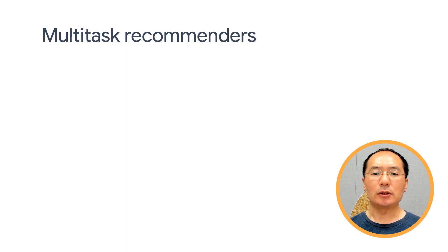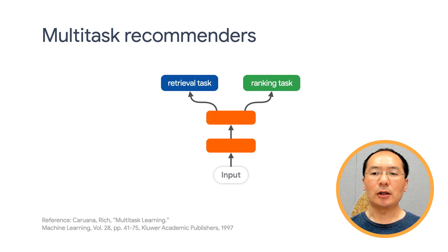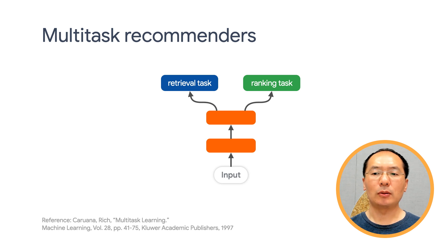Our next topic is multitask recommenders. Multitask learning is not a new idea — back in 1997, Rich Caruana published a widely cited paper on multitask learning. The idea is to solve multiple machine learning tasks at the same time, while exploiting commonalities and differences across tasks. This makes sense because in many real-world applications, there are multiple sources of feedback to draw upon.